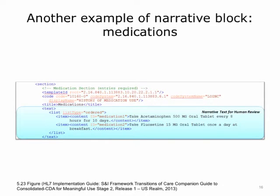Looking at a narrative block on medications: one of the first things listed is the section code, which is a LOINC code. LOINC code 10160-0 means History of Medication Used. The XML tags give instructions to display the title as 'Medications' and then list each medication as an ordered list of items. The tags — title, text, list, item, and content — control how the content looks on screen. The text reads in sentence form: 'Take acetaminophen 500 mg oral tablet every 8 hours for 10 days,' making it readable on screen rather than multiple separate structured fields.